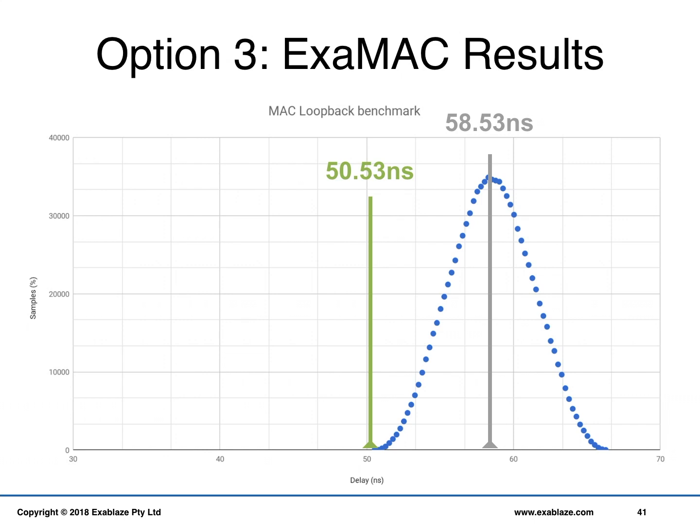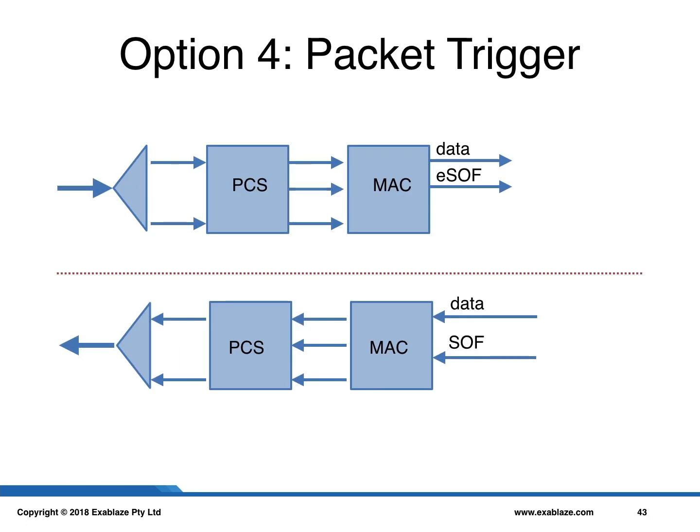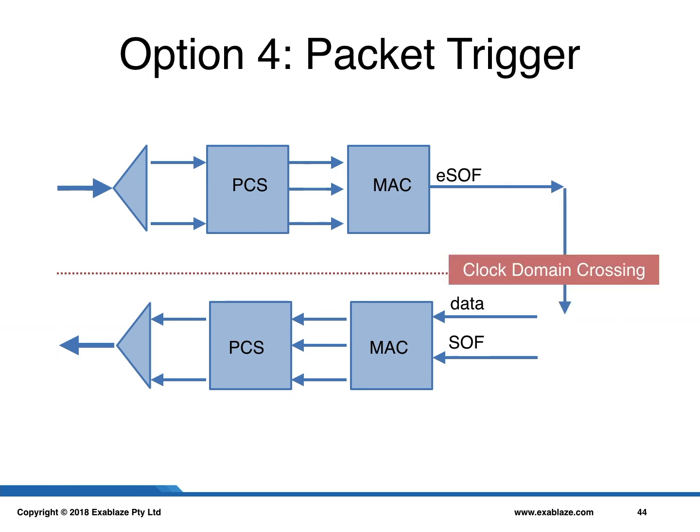There are several problems with this measurement methodology. The first is that it's an unrealistic test scenario — full loopback inside an FPGA device is a fairly uncommon use case and doesn't really reflect the use case of our clients, which is typically tick-to-trade scenarios. A measurement option more reflective of our use case is a packet trigger. In this case, when a packet arrives, the start-of-frame signal is crossed into the transmit clock domain and triggers the sending of a frame.